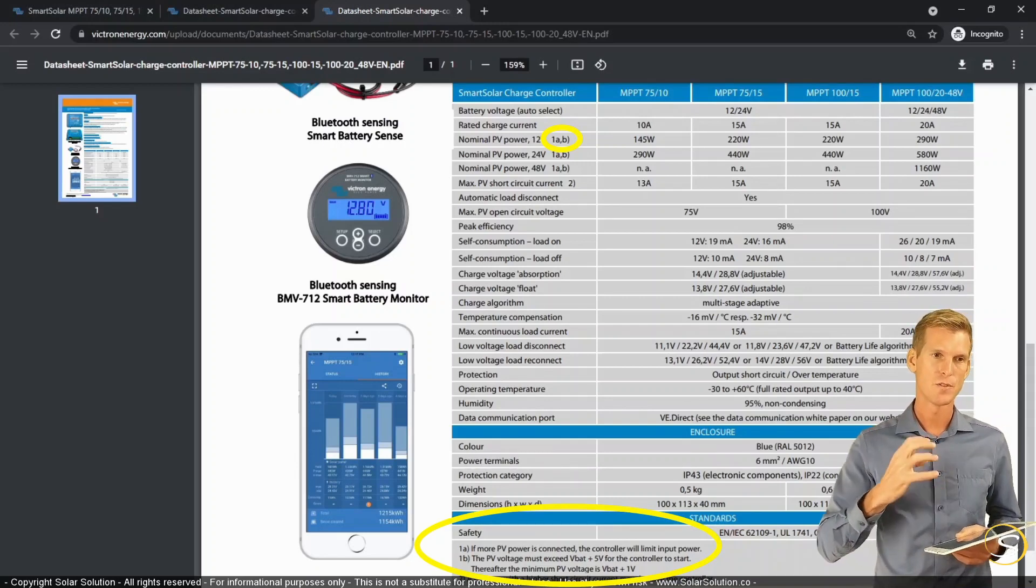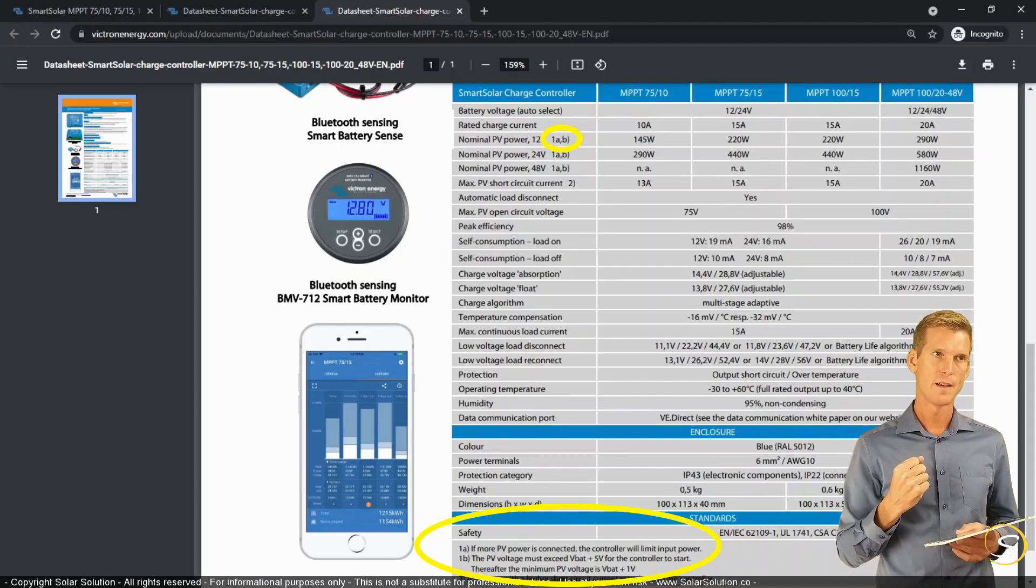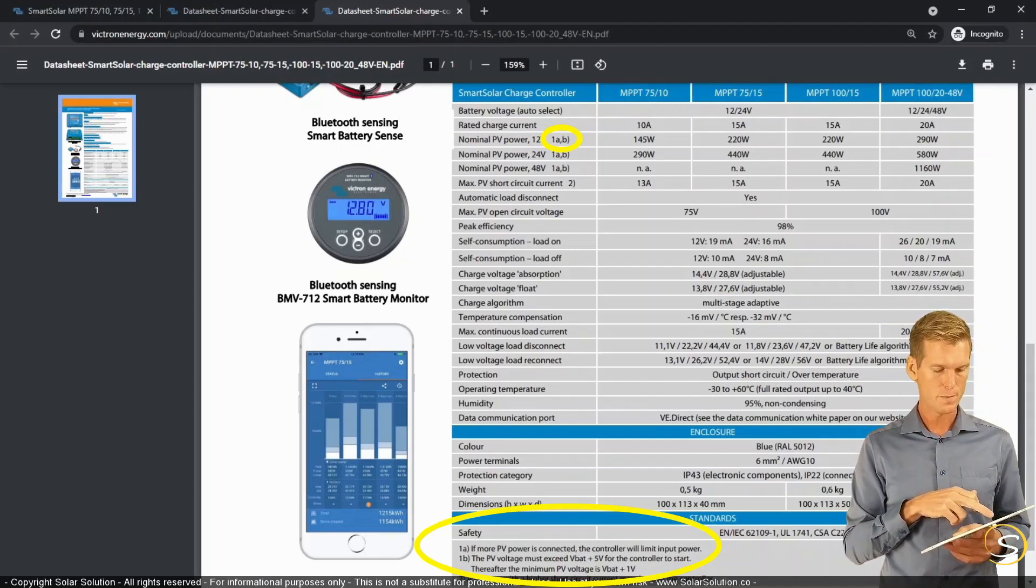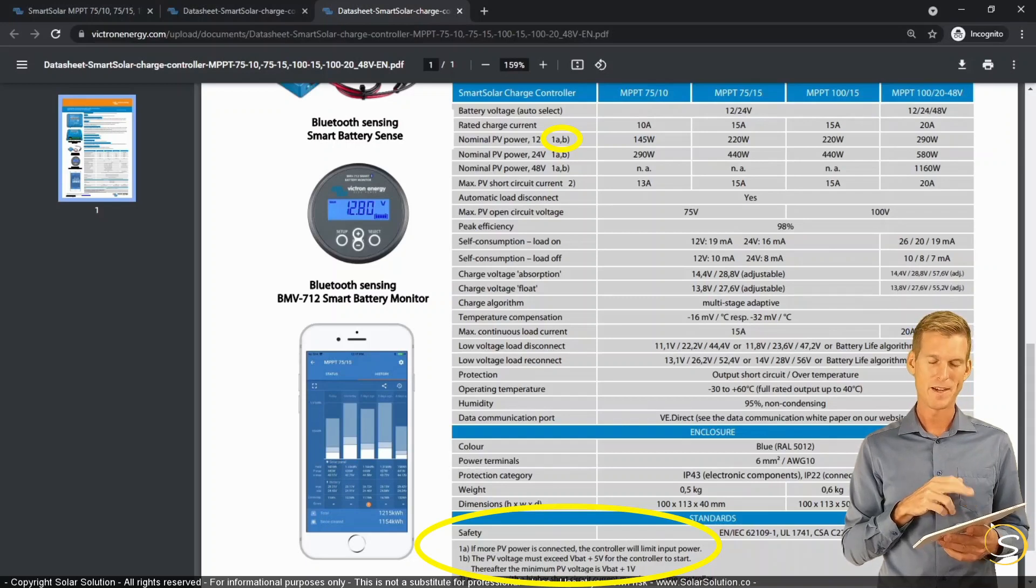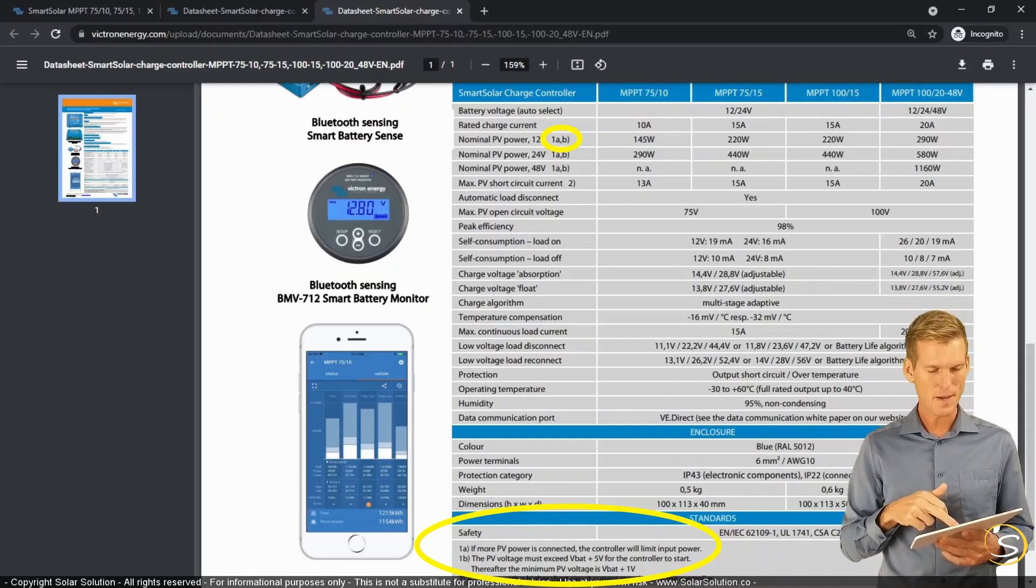So the MPPT solar charge controller is also able to draw less power from a solar array than what the array could produce. Because it says if more PV power is connected. So they're not saying this, but my interpretation of that is that you can connect more PV power than what the charge controller can process.